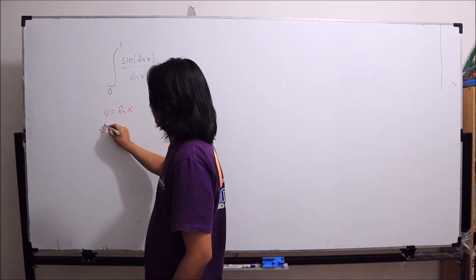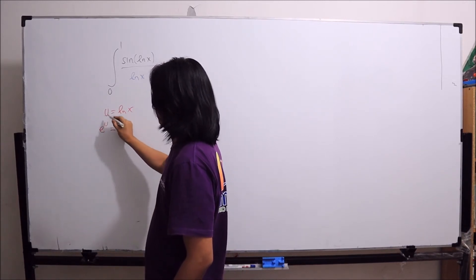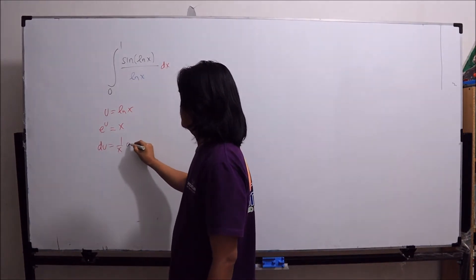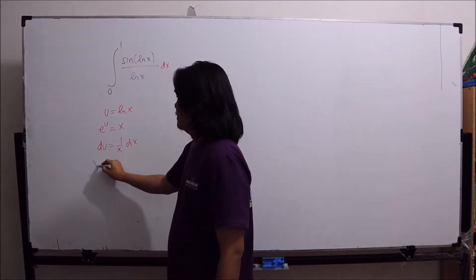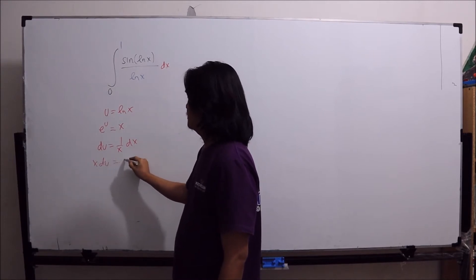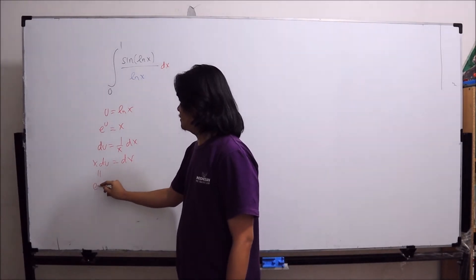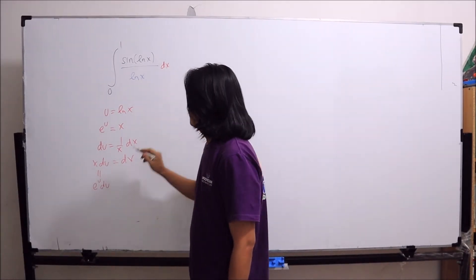Therefore, e to the u is equal to x. And then, if you take the derivative of that, we have du is equal to 1 over x dx. So, dx is equal to e to the u du.